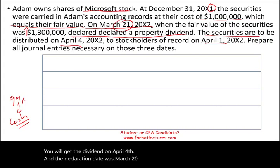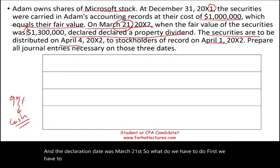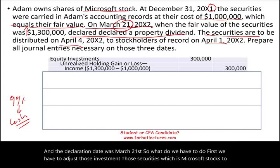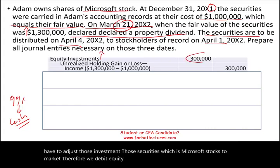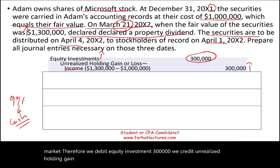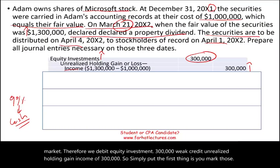So what do we have to do? First, we have to adjust those investments — those securities, which is Microsoft stock — to market. Therefore, we debit Equity Investment $300,000 and credit Unrealized Holding Gain Income of $300,000. Simply put, the first thing is you mark those securities to market.